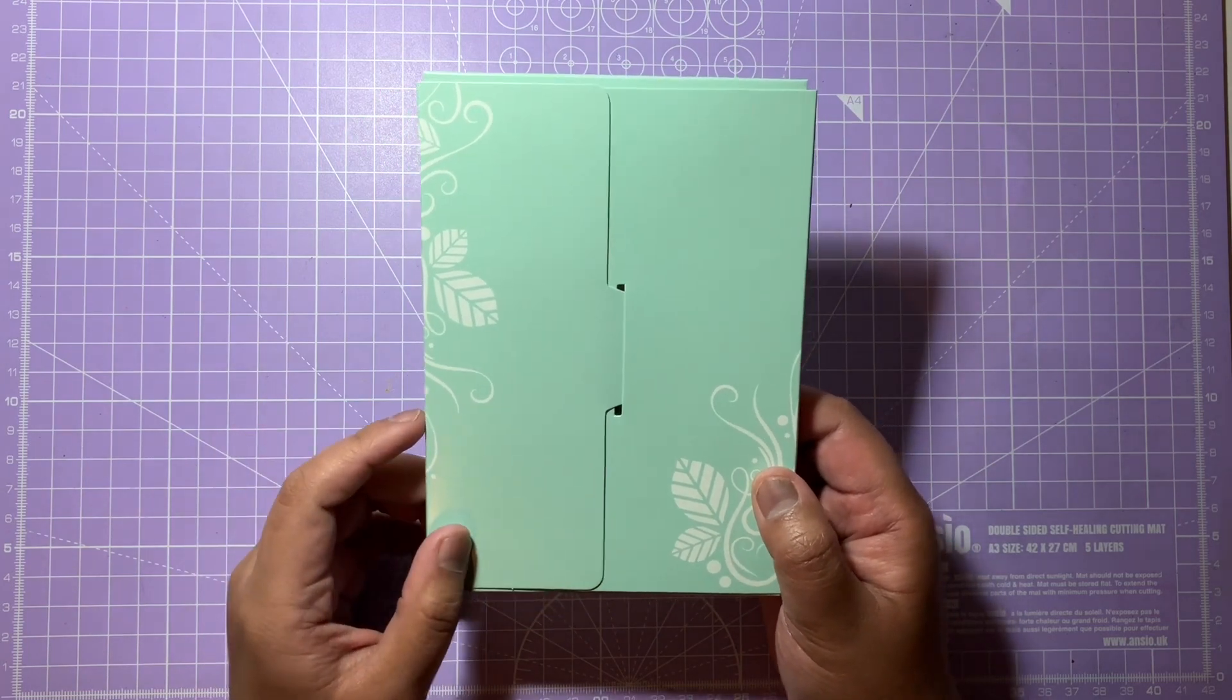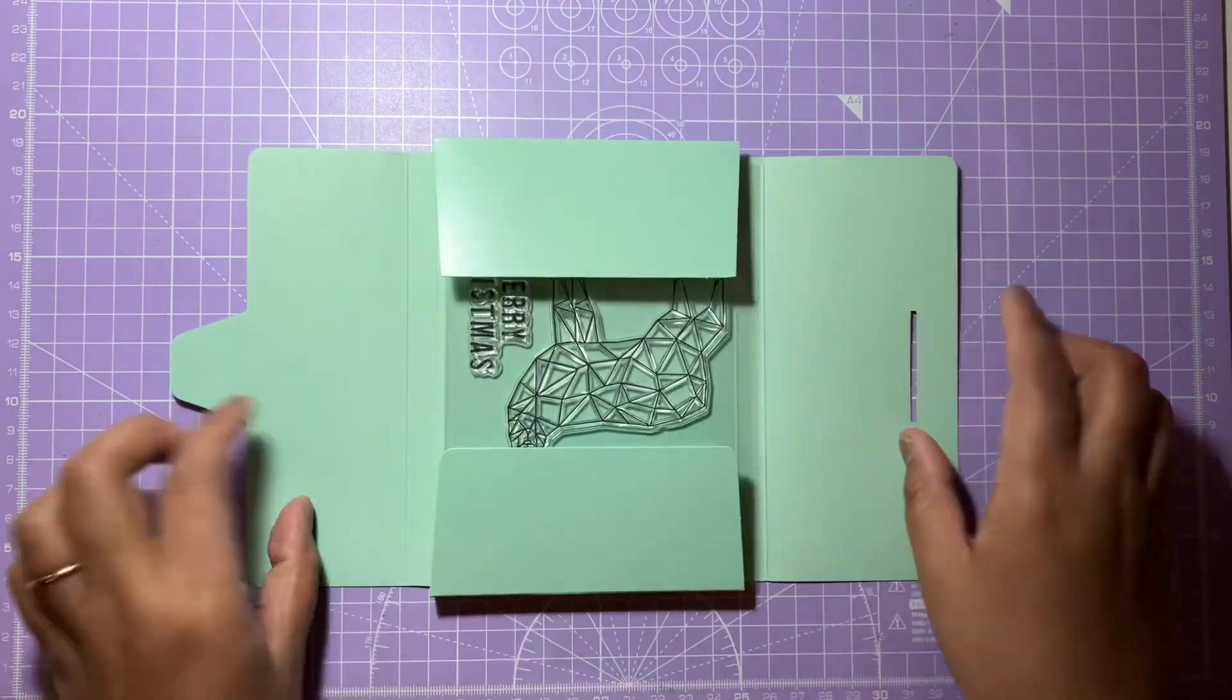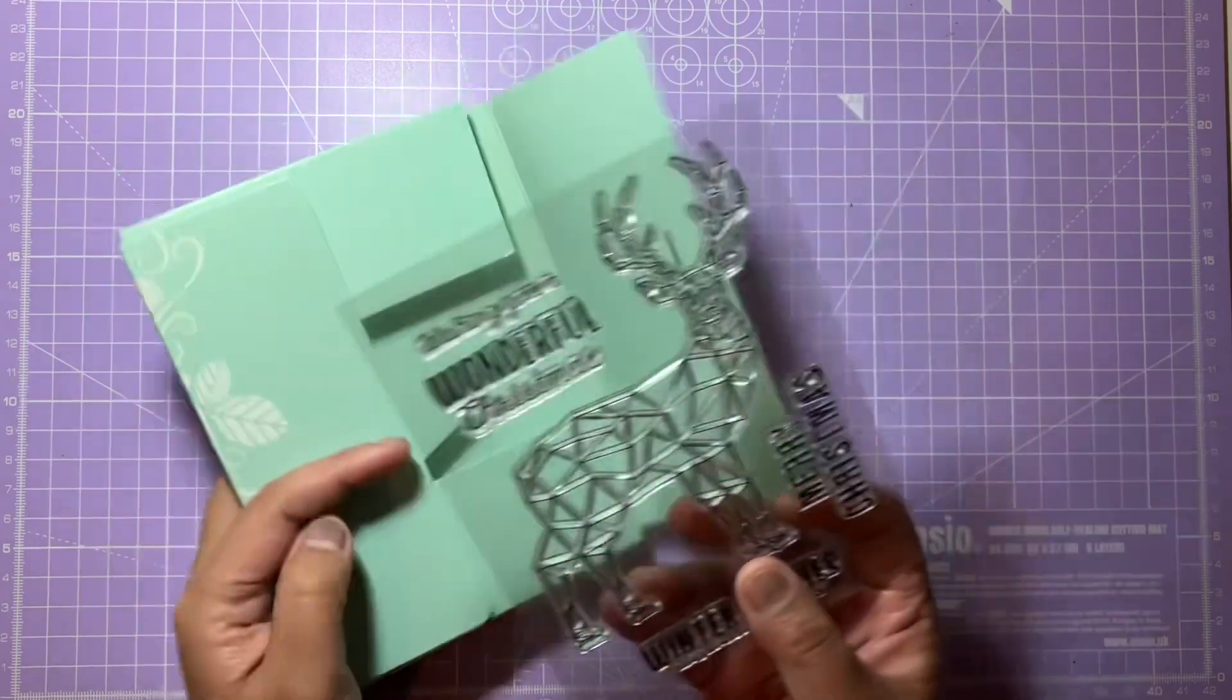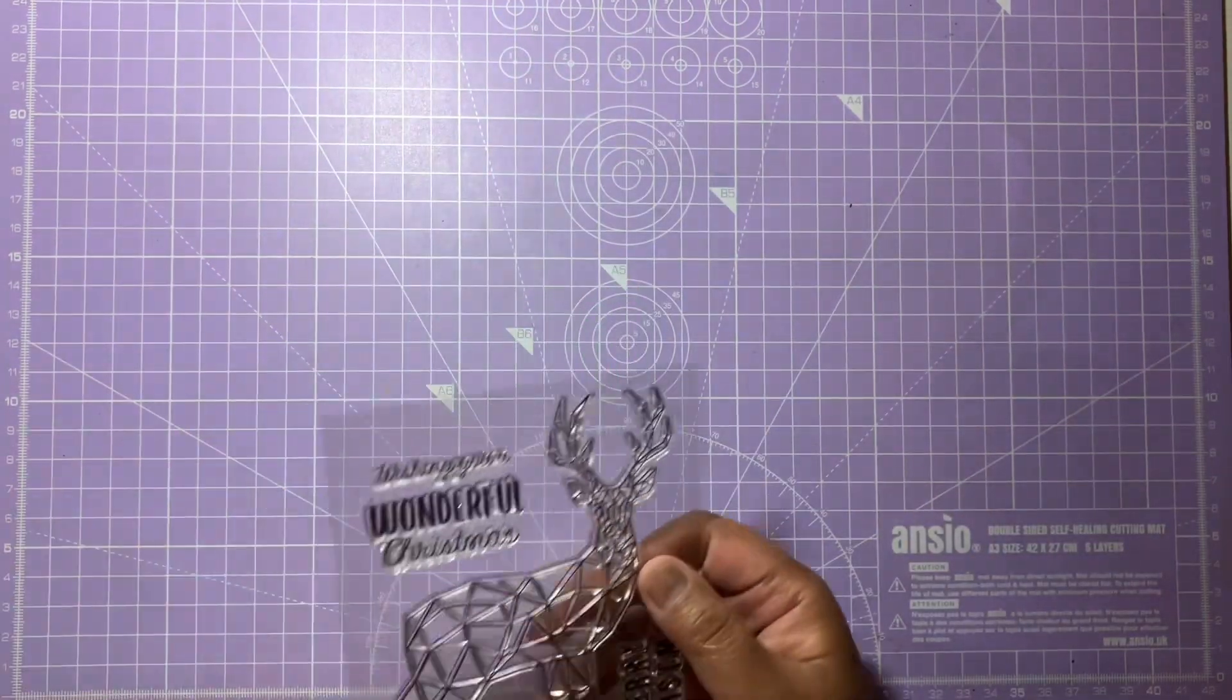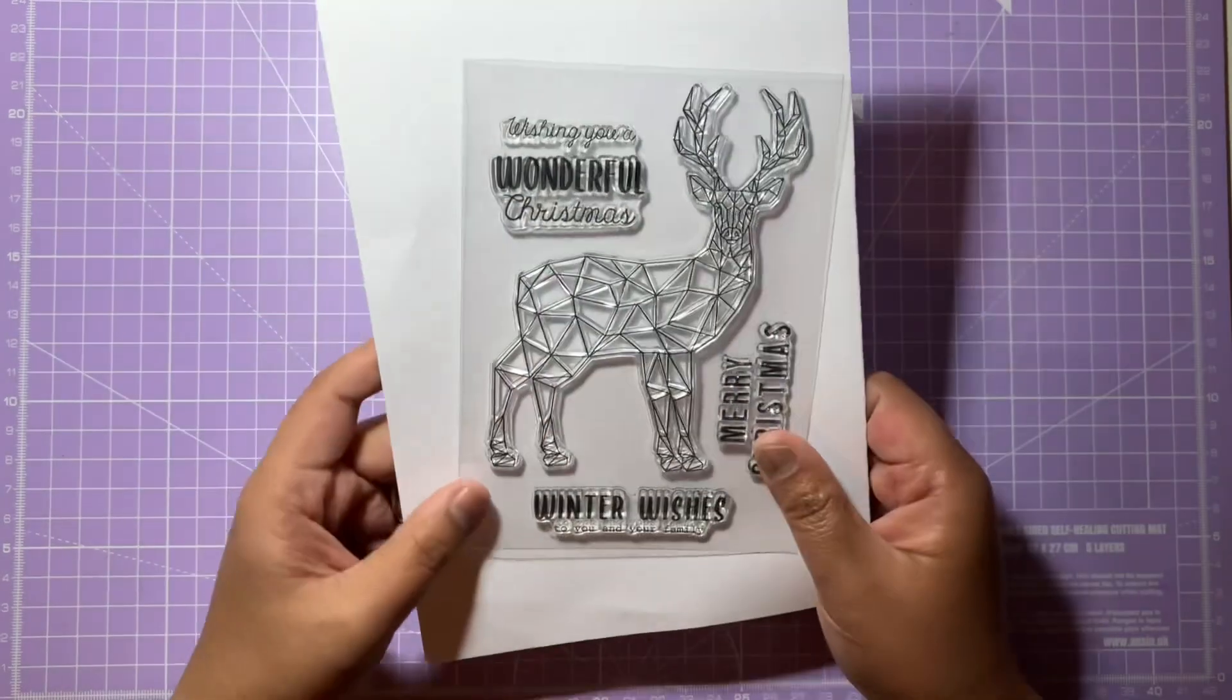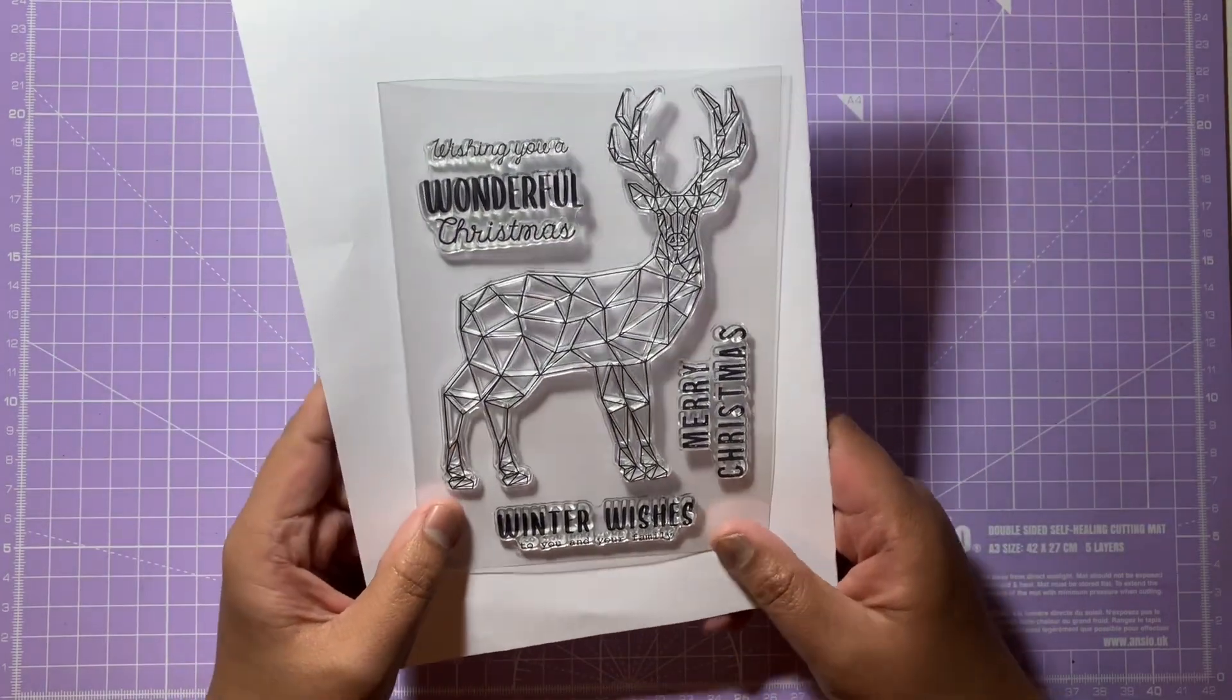This is day one so we've got a stamp set here. I'm just gonna put the envelope to the side and put the stamp set here against this white piece of paper so you guys can see it.